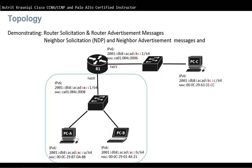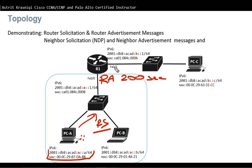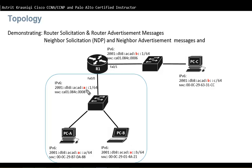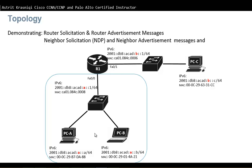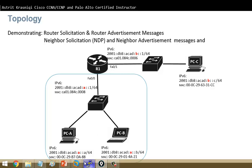This is the topology we'll use to demonstrate Router Solicitation and Router Advertisement messages. We may not see Router Solicitation messages since our devices already have static IP addresses. In the topology, we have a root prefix with subnet ID A for all devices on one LAN, each with a unique interface ID. On the other side, the same root prefix uses subnet ID B with interface IDs 1 and C. For configuration details, see chapter 6.